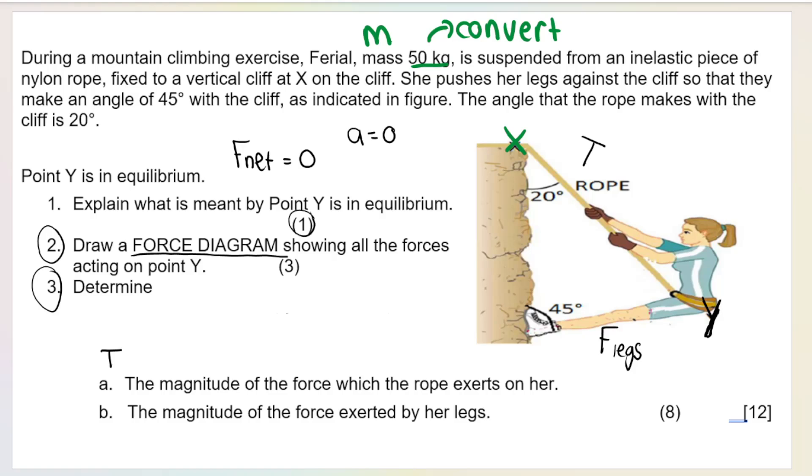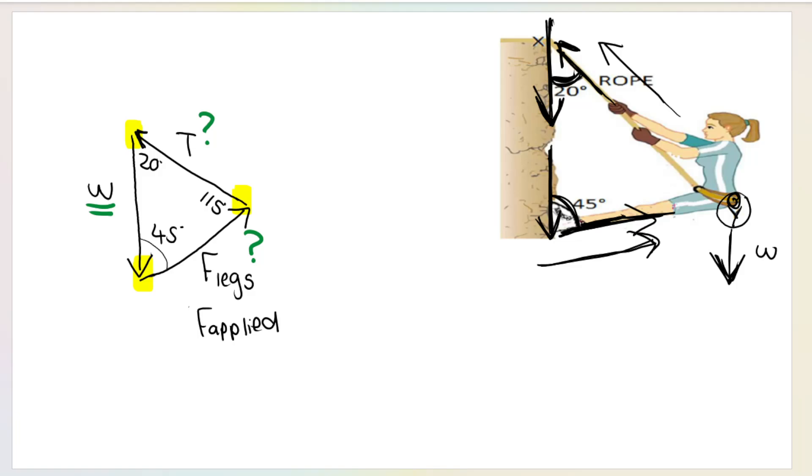That means I should know the weight. Nothing's on the diagram, but if you read the question carefully, they tell me the mass. At the beginning, I said they give me the mass, which means I'm going to need to convert that to the weight. Weight is FG or W equals mass times gravity. The mass is 50 kilograms, gravitational acceleration is 9.8. So 50 times 9.8 gives me 490 Newton downwards.